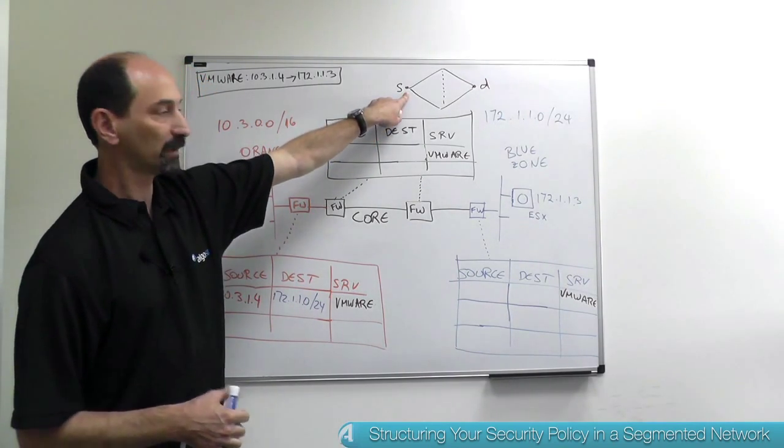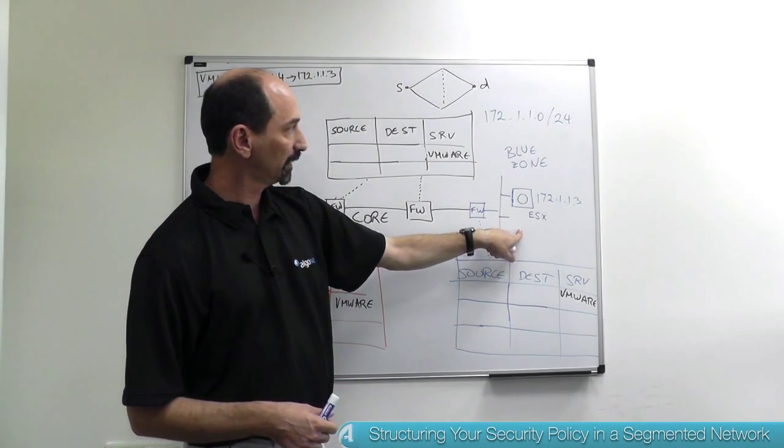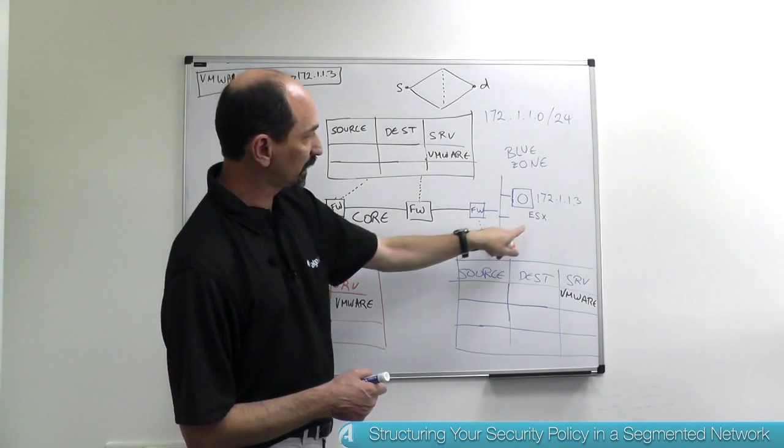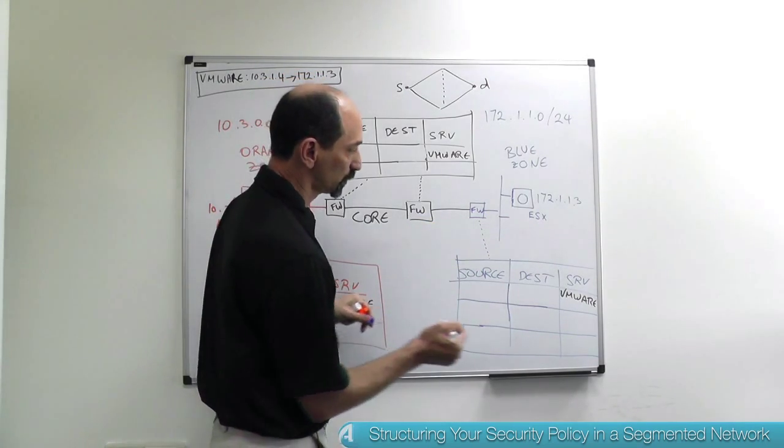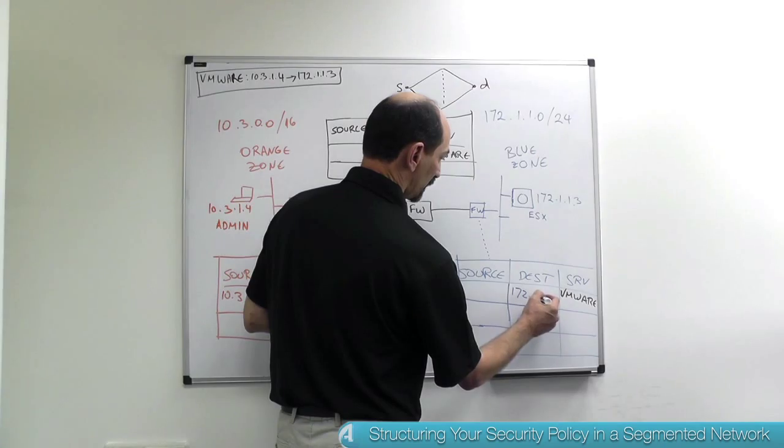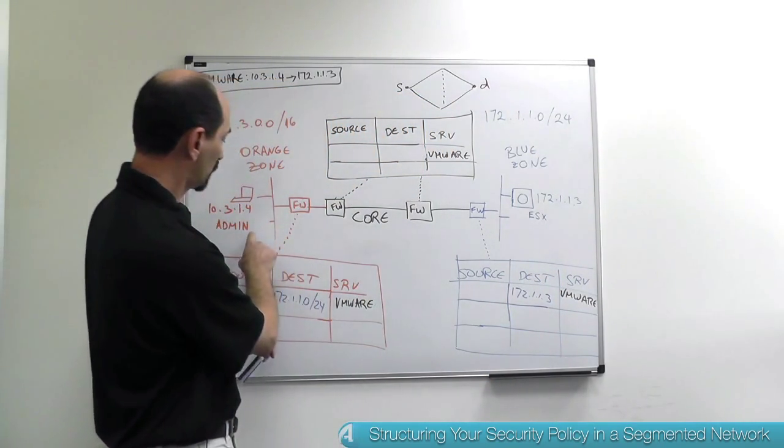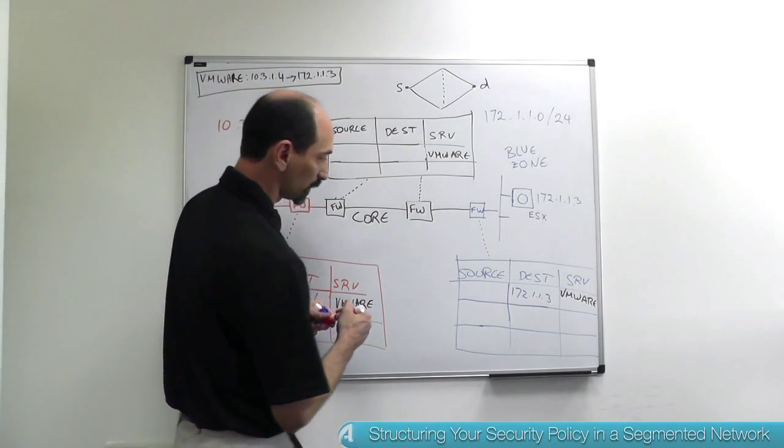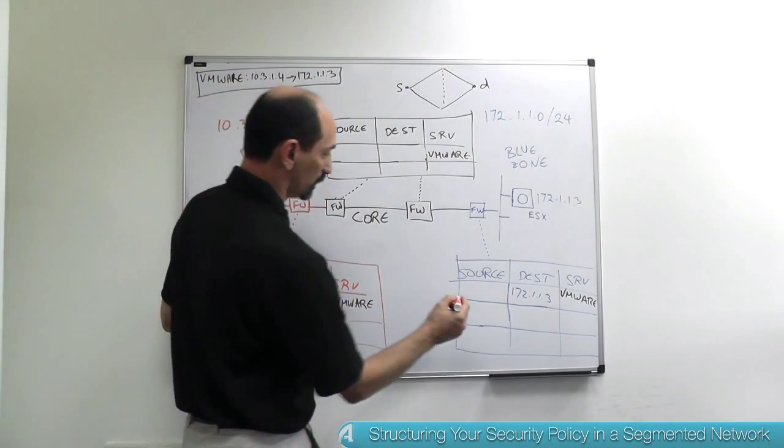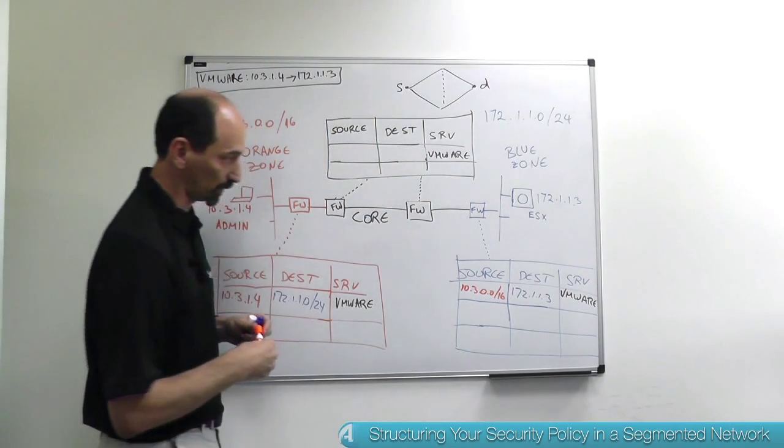That's the starting point of the diamond. If you look at the other side at the blue firewall protecting the blue zone, here you're very close to the destination. So you should be specific with regards to the destination. So just allow that one destination. But you're quite far away from the source. So you can allow all traffic from the whole orange zone. So 10.3.0.0/16 in terms of source.